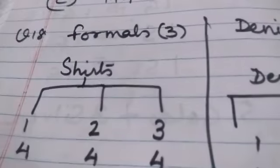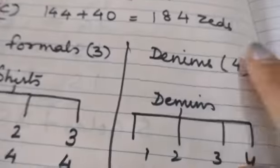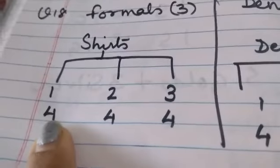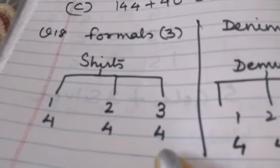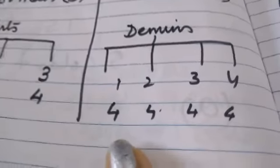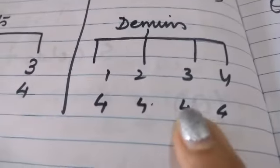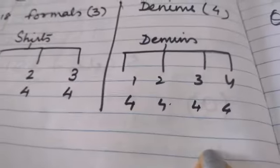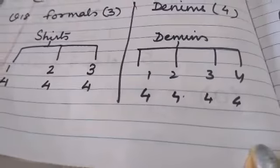So let's do the question number 18. Now here we have the option of 3 formal shirts and 4 denim shirts. So for 3 shirts we have options of 4 pants each, so total there will be 12 options. Now when we select denim shirts there are 4 types of shirts and for each shirt again there are 4 options of pants. So 16 options. In all there will be 28 options. So answer to question number 18 will be part D, 28.